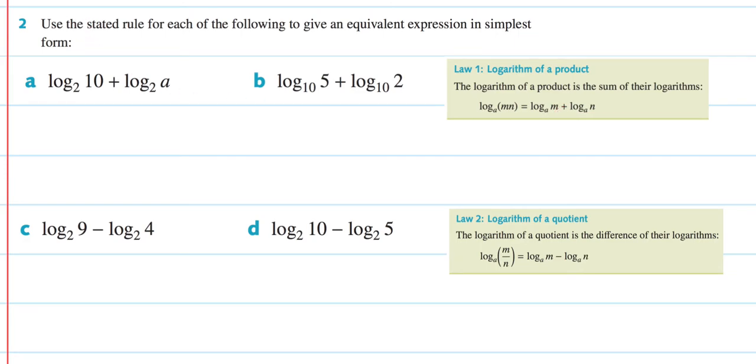So for A and B, we need to use law 1, the logarithm of a product. The logarithm of a product is the sum of their logarithms, and here's an example of what we're going to be doing. So let's now see it in action. So the fact that we have the same base, we have 2 here and we have 2 here, that means we can multiply 10 and A together. So we're going to get log₂(10A). So they're multiplying together.